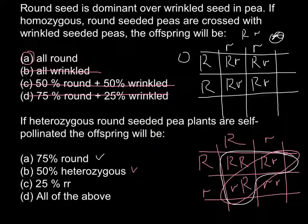And C: 25% would be homozygous recessive. We also have 25% — 1 box out of 4 — that is homozygous recessive, small r, small r. So this answer is also correct. Therefore, the correct answer is D — all of the above.